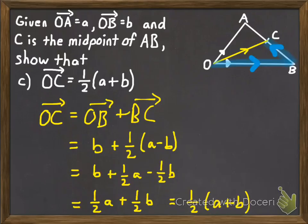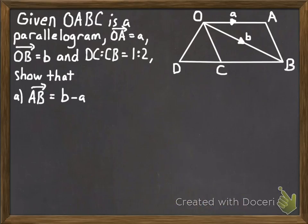Let's look at another example here with a more complicated-looking picture. In this picture, it says that O, A, B, C is a parallelogram. And then it tells us that vector OA is once again equal to a, and vector OB is once again equal to b. And then this is an interesting thing. It tells us the ratio of DC to CB is a one-to-two ratio, meaning that this is basically half of this distance right there. And we're going to start off by showing that vector AB right here is equal to the difference of b and a.